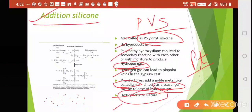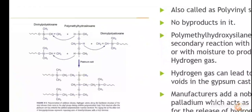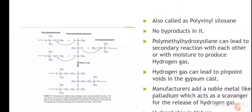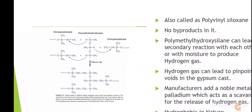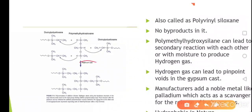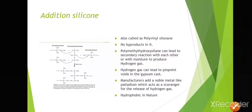To prevent pinpoint voids, manufacturers add a noble metal like palladium, which acts as a scavenger for hydrogen gas. Addition silicone is hydrophobic in nature — all elastomers are hydrophobic except polyether, which is hydrophilic. Platinum salt acts as the catalyst and no byproduct is formed.